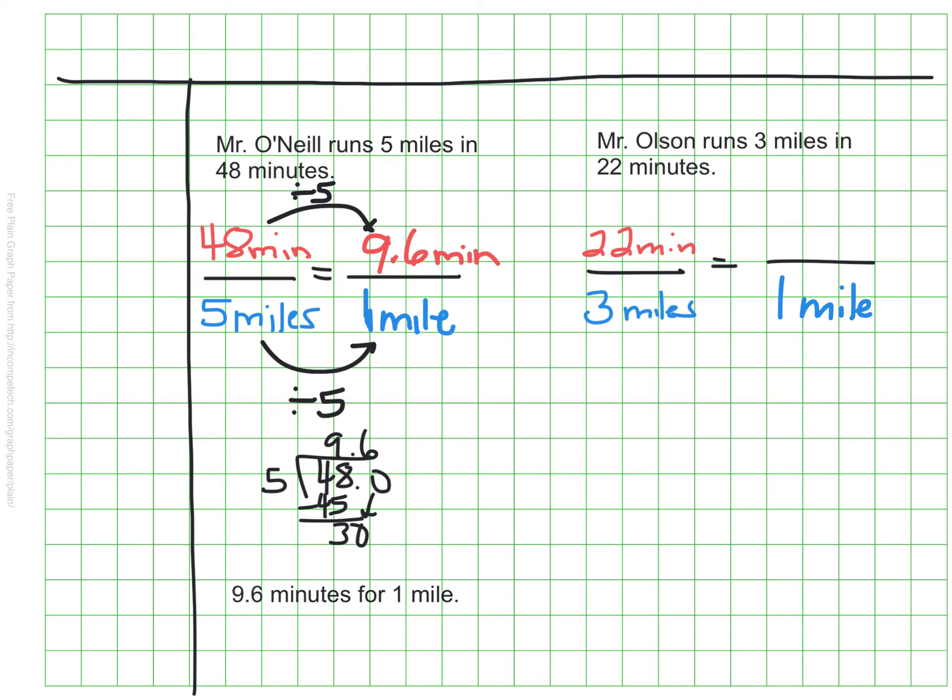I can see again that I'm scaling down, and this time it looks as though I'm dividing 3 by 3 to figure out one mile. So I'll do the same thing up here to my 22. So I'll need to divide 22 by 3 to see how long it takes him to run one mile. From my calculations, I can see that it's going to take Mr. Olson about 7 and a third of a minute, so 7 and 3 repeating minutes, to run his one mile. That's his unit rate.